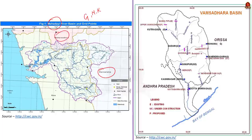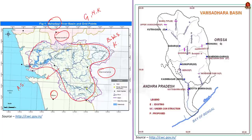The river Mahadai or Mandavi river is a west-flowing river — it flows westward and drains into the Arabian Sea. The river originates in Bhimgad Wildlife Sanctuary, which is in the Belagavi district of Karnataka. This rain-fed river flows through Karnataka, Maharashtra and Goa. This river along with Zuhari are the two primary rivers in the state of Goa. For river Vamsadhara, the states in dispute are Andhra Pradesh and Odisha.